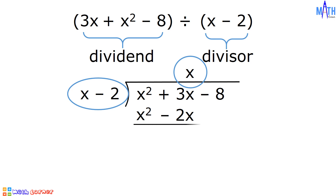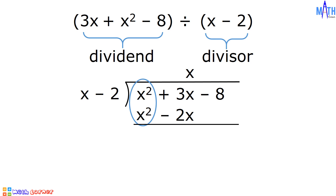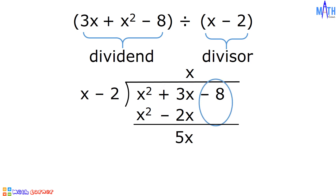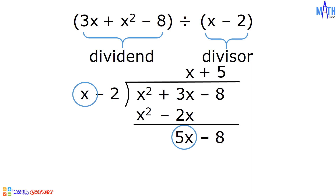Next step, let us subtract. x squared minus x squared is equal to 0. 3x minus negative 2x is equal to 5x. Bring down negative 8. And then we will repeat the process. 5x divided by x is equal to positive 5.